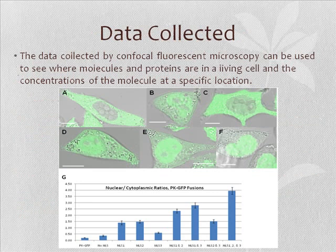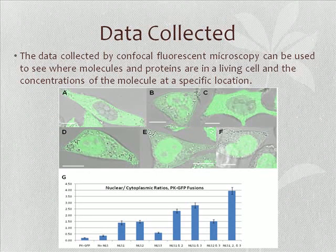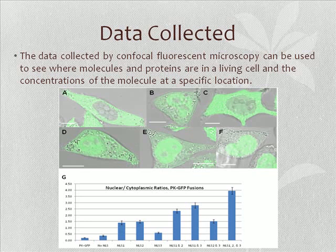Here at Georgia Southern, this is an example of Dr. Scarpinato's data that she's collected. In some of the images produced, you can see that in image B the protein she's tracking is all over the cell, but it fluoresces brighter in the middle than on the outside, so the protein is more concentrated in the nucleus. While in image C, the protein they're tracking is way more present in the cytoplasm than in the nucleus of the cell.